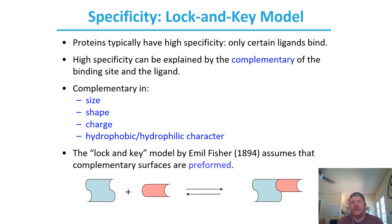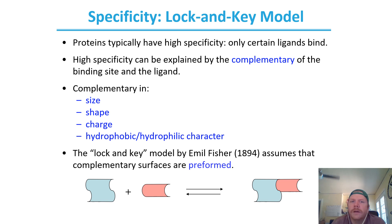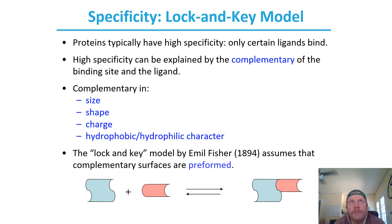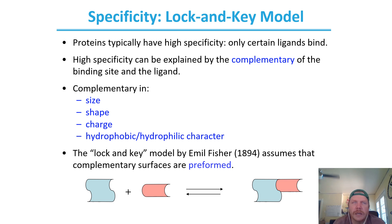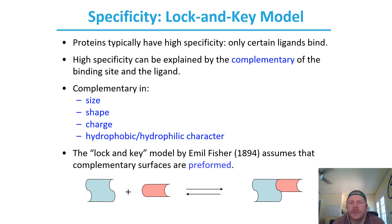Specificity for a ligand: proteins typically have a high specificity for their ligands, and only certain types of ligands are going to bind. This high specificity can be explained by the complementarity of the binding site and the ligand. That complementary aspect can be found within size, shape, charge, hydrophobic, and hydrophilic character. A model proposed to explain this is known as the lock-and-key model.